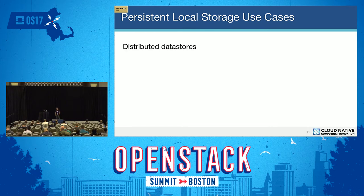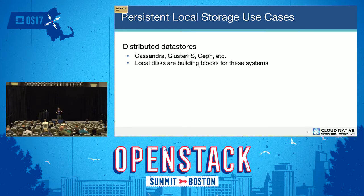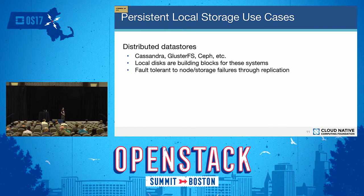A second use case is containerizing distributed data stores. Examples include Cassandra, Gluster, and Ceph, among many others. These systems leverage local disks and expose them in a distributed layer accessible across the whole cluster. Fault tolerance is built in — they replicate data across multiple nodes to tolerate single node or storage failures. This is an extremely appropriate use case for persistent local storage.